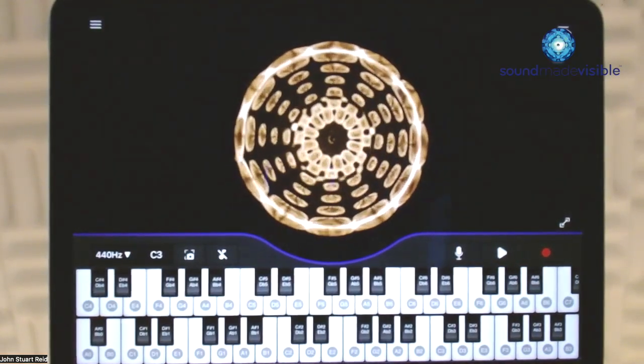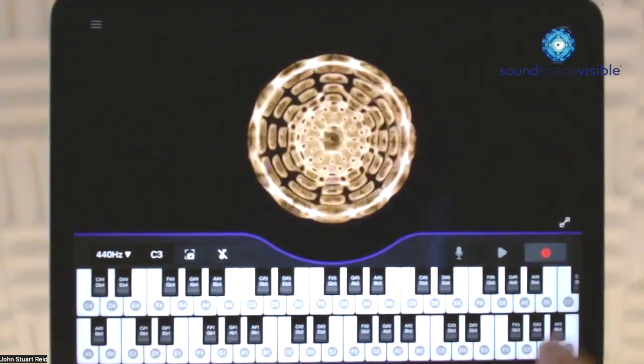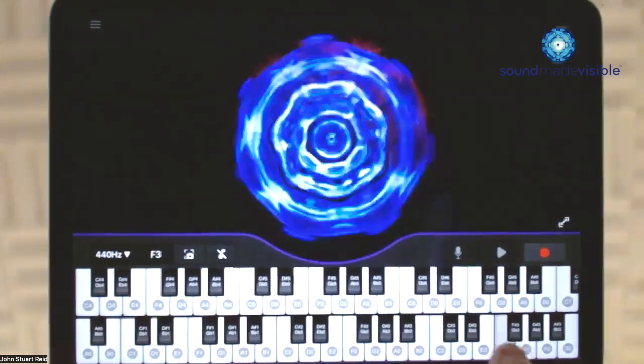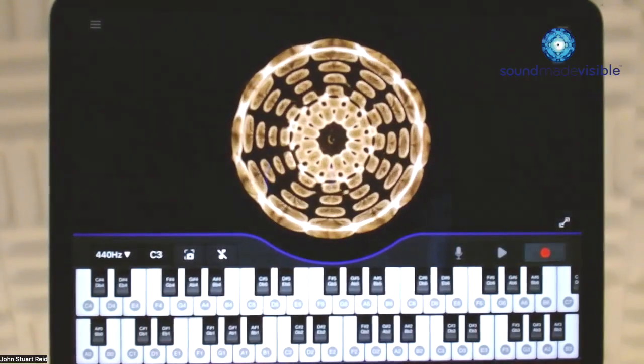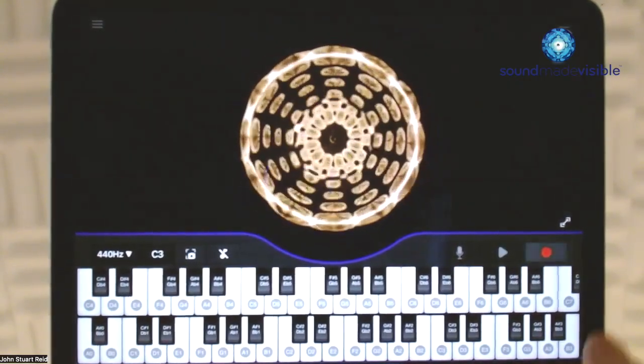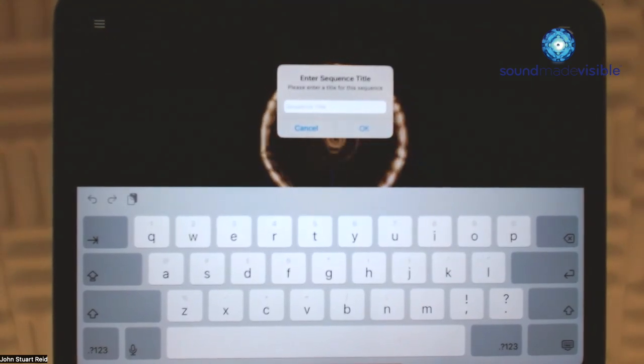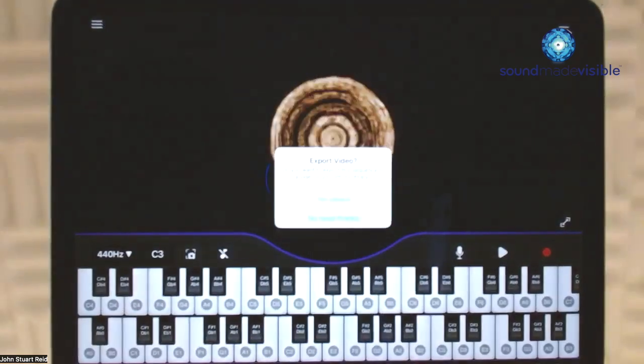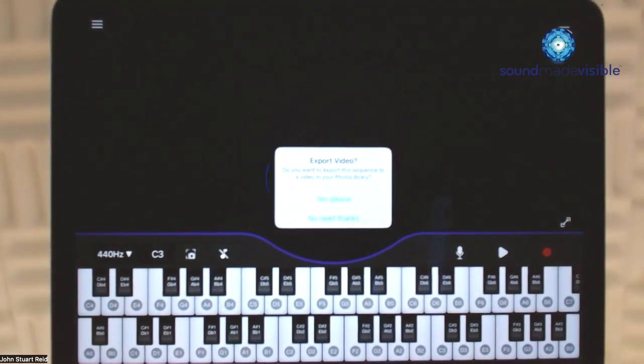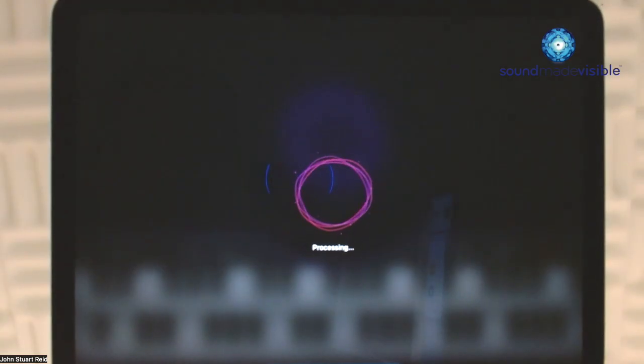If you wish to record a melody, simply tap the red record button, then play a melody. To stop the recording, tap the record button again, and you'll see a pop-up asking if you wish to name this video. I'll just put JSR and OK. Now it's asking if we'd like to export this video. Yes, please. This will take a few seconds.